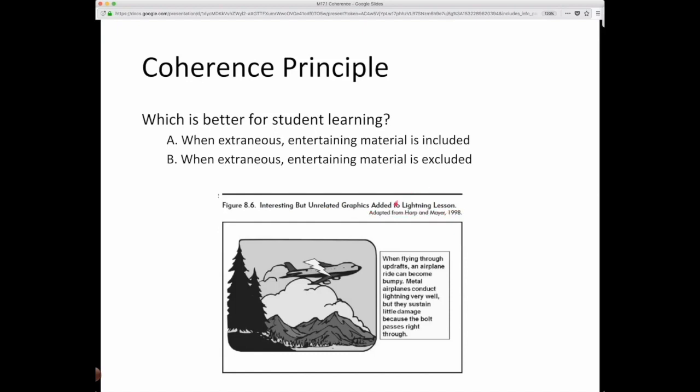So if our learning objective is about the processes of lightning, is it better to include some entertaining material like this about when flying through updrafts and airplane rides can become bumpy. Metal airplanes conduct lightning very well, but they sustain little damage because the bolt passes right through. The goal is to learn the processes of lightning. Is including this picture of an airplane being struck by lightning helpful for learning or not?